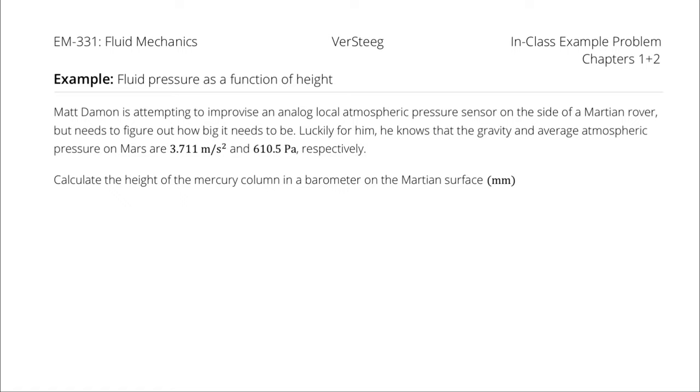Matt Damon is attempting to improvise an analog local atmospheric pressure sensor on the side of a Martian rover, but needs to figure out how big it needs to be. Luckily for him, he knows that the gravity and average atmospheric pressure on Mars are 3.7101 m/s² and 610.5 Pa, respectively. Calculate the height of the mercury column in a barometer on the Martian surface in millimeters.